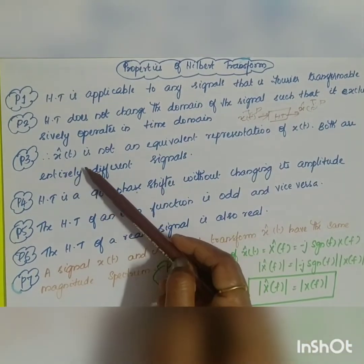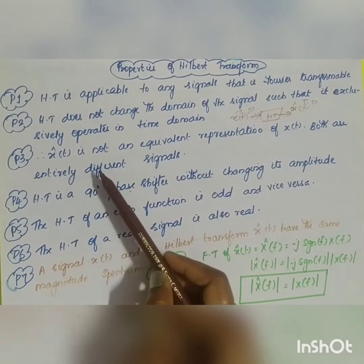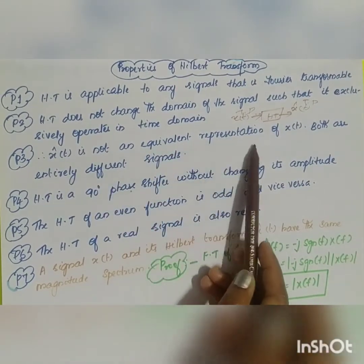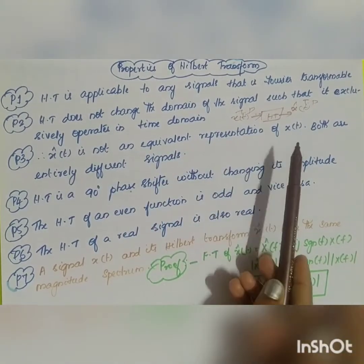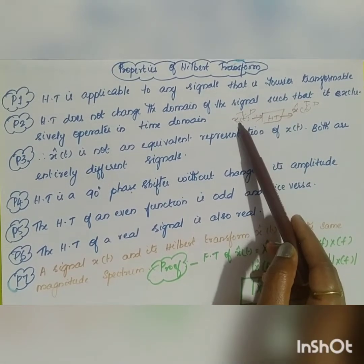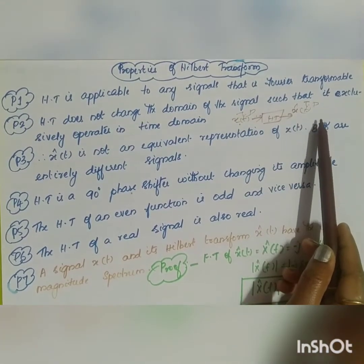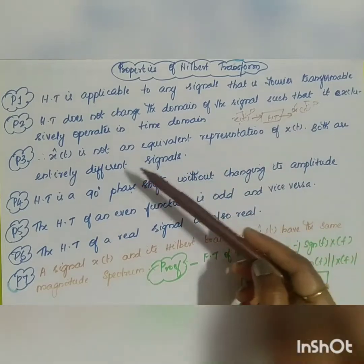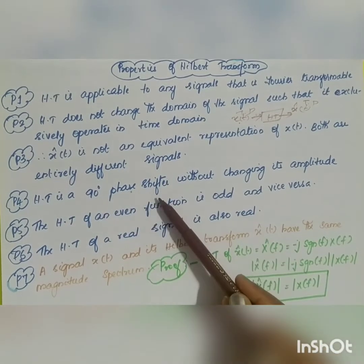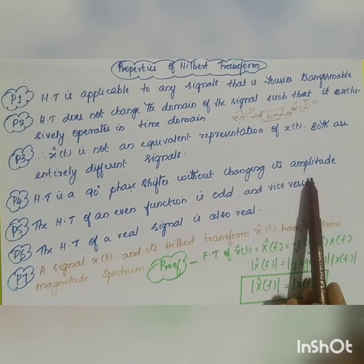The third property is: since it operates in the same domain, x̂(t) is not an equivalent representation of x(t). x̂(t) is entirely different from x(t) because it has a 90-degree phase shift. The fourth property is that the Hilbert transform is a 90-degree phase shifter without changing the amplitude.